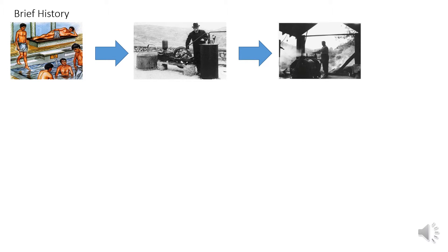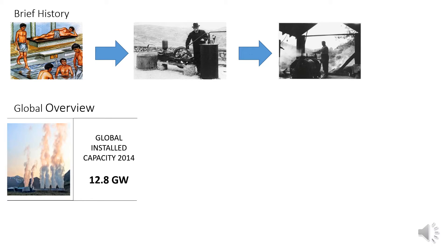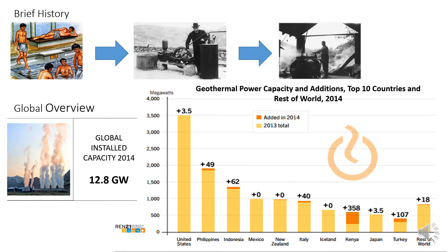Global installed capacity of geothermal energy reached 12.8 gigawatts in 2014, with increasing contributions from different nations. The graph demonstrates the top 10 countries in geothermal power production in 2014. The United States have the highest geothermal installed capacity, while Kenya installed the highest added capacity, reaching up to 358 MW in 2014.